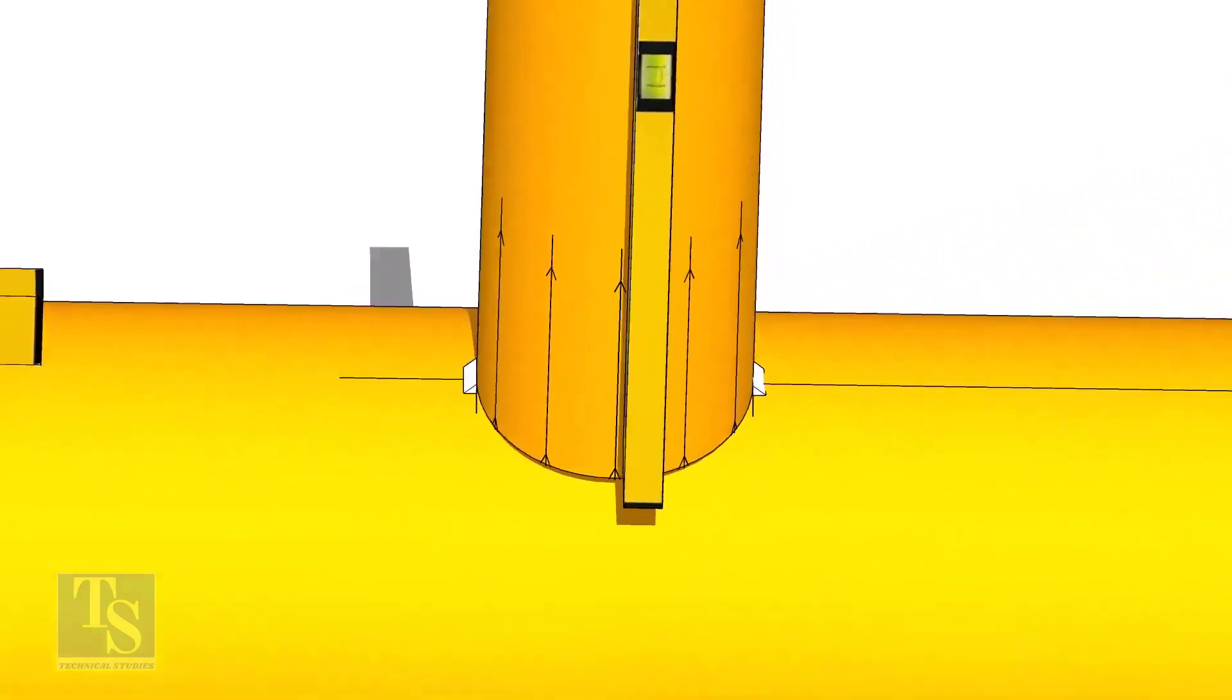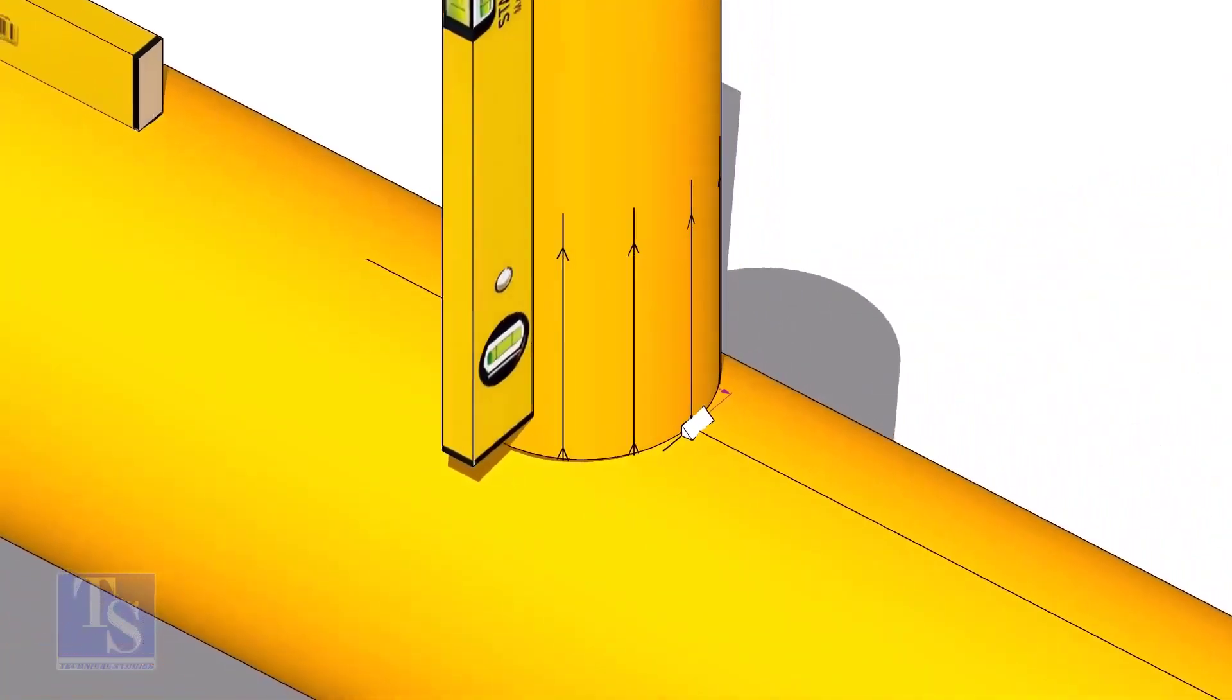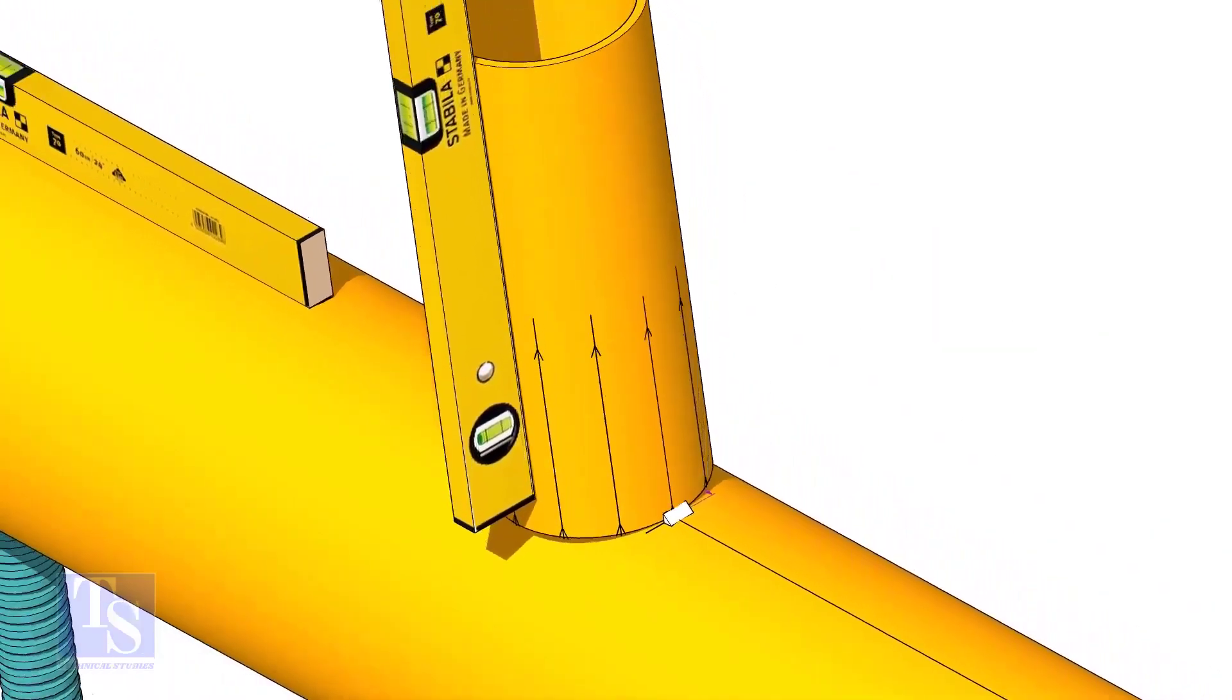Now make sure the pipe header and the branch are horizontally and vertically level. If required, strengthen the tack weld.